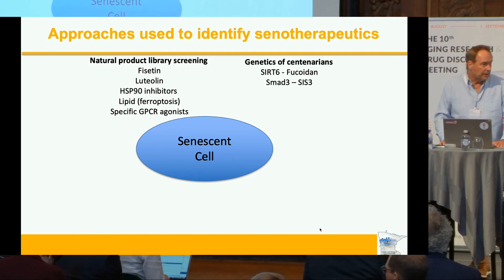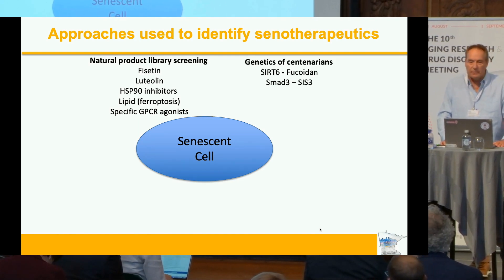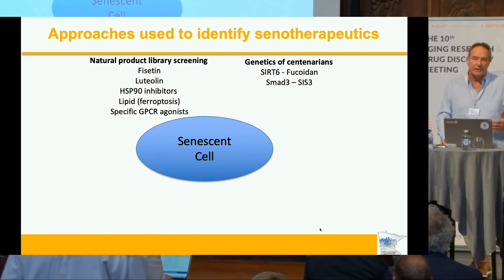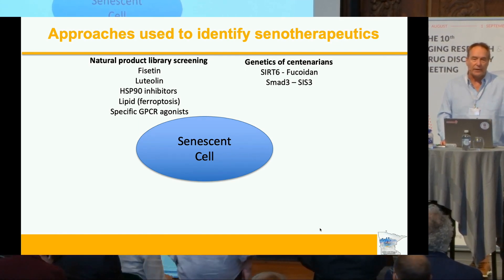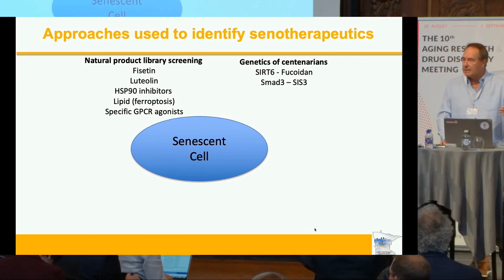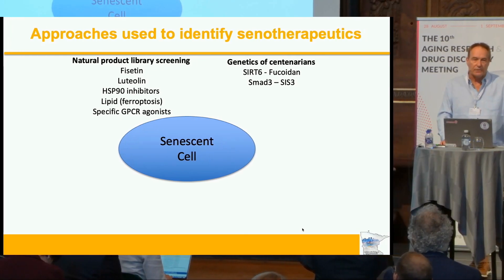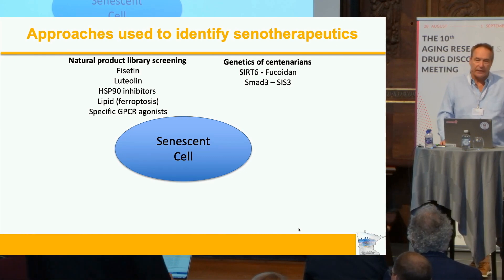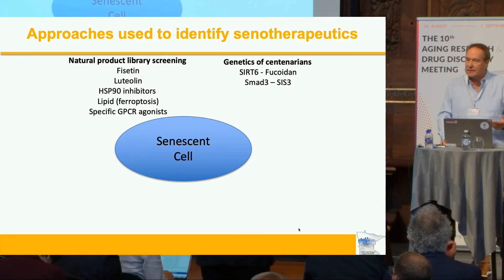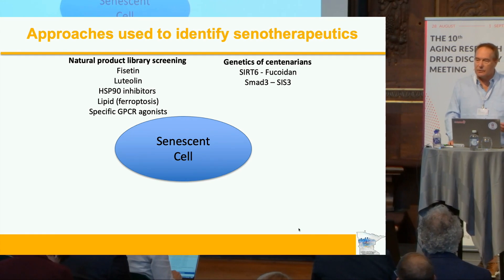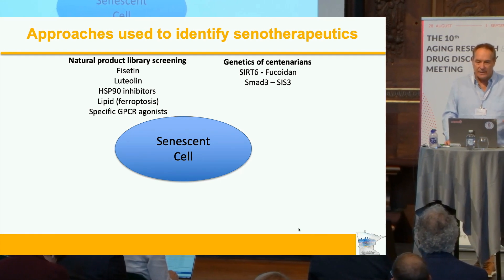We're also collaborating with Vera Garbanova, Yousin Suh, Nir Barzilai, and Jan Feig to use the genetics of centenarians to identify validated targets, and then we're trying to develop compounds that mimic the activity of those variants. So we're developing drugs targeting SIRT6 and SMAD3, which you heard from Yousin. And Vera, I think, is going to talk about fucoidan, which is the complex sugar which we've shown activates SIRT6, similar to the two amino acids centenarian variant.